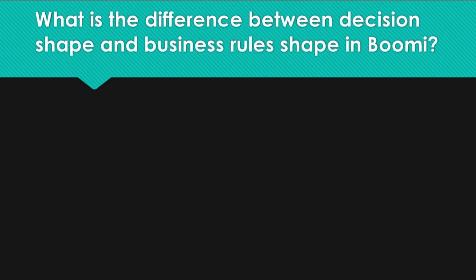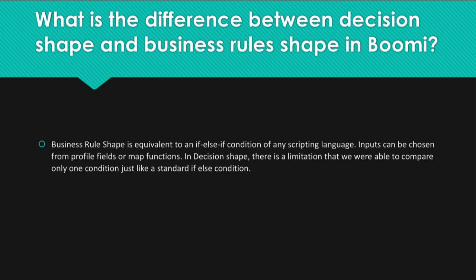Question: What is the difference between decision shape and business rules shape in Bumi? Answer: The business rule shape is equivalent to an if-else-if condition of any scripting language, where inputs can be chosen from profile fields or map functions. In decision shape, there is a limitation that you are able to compare only one condition, just like a standard if-else condition.